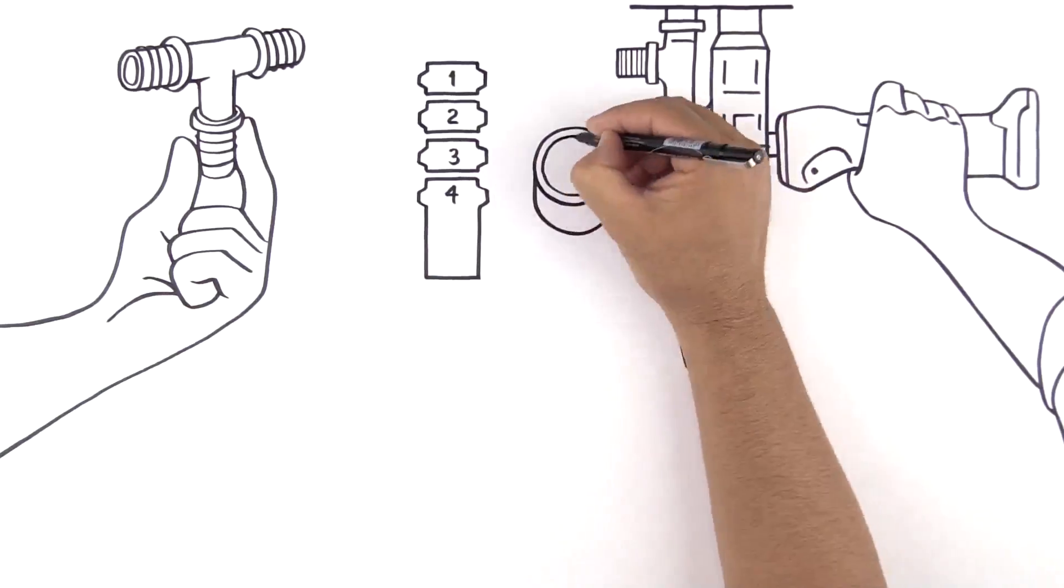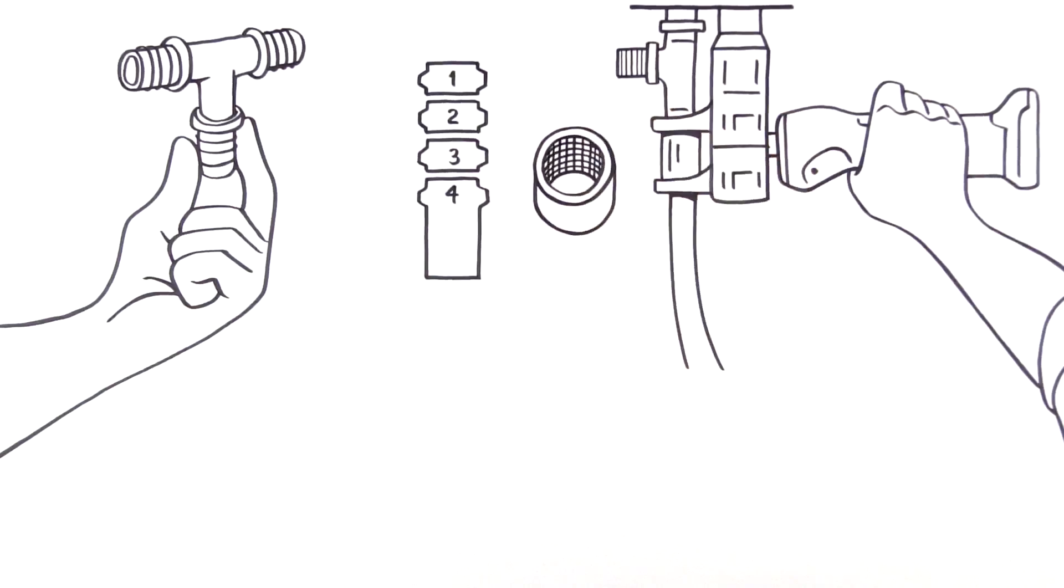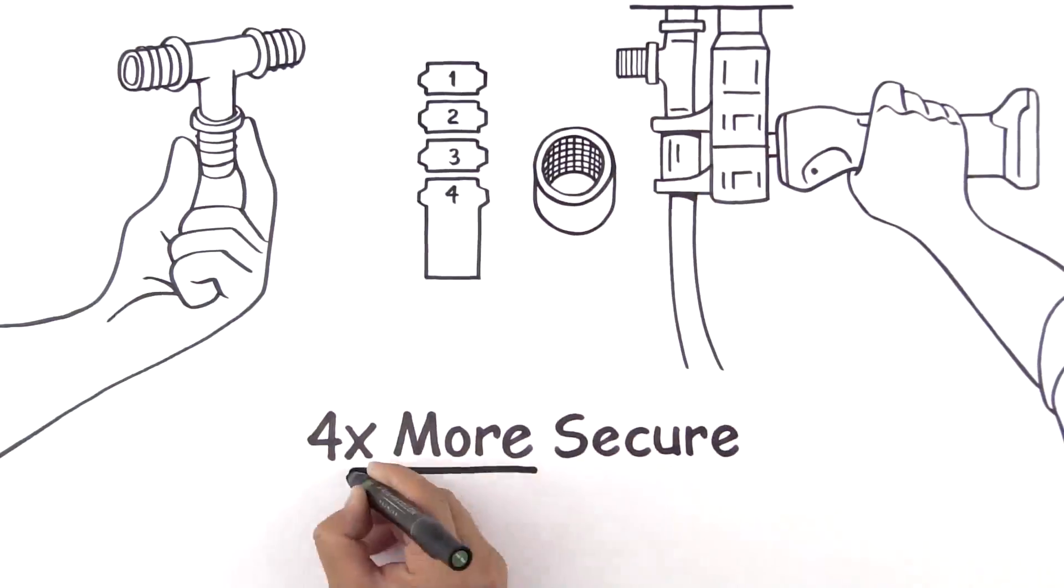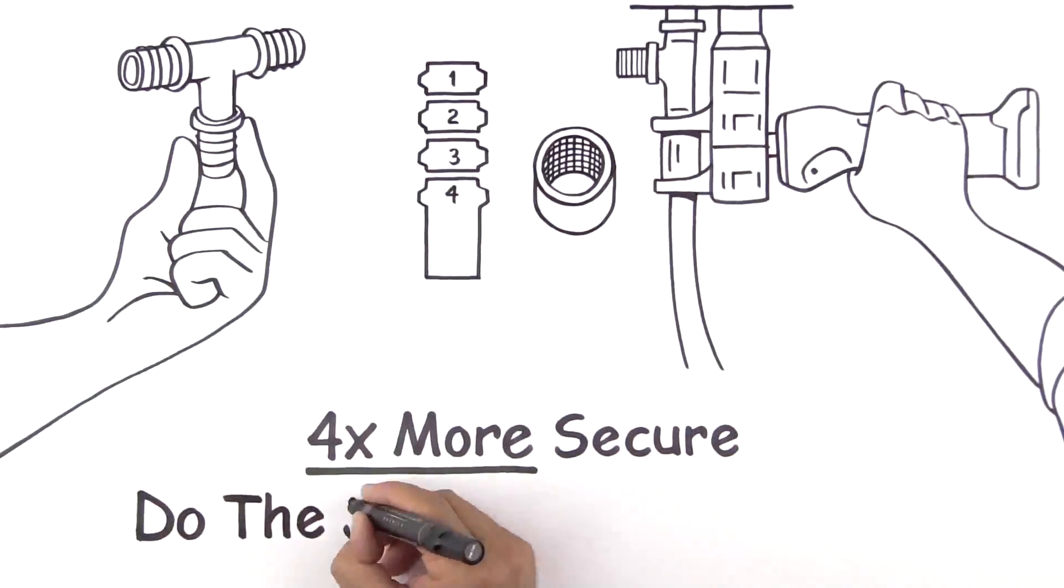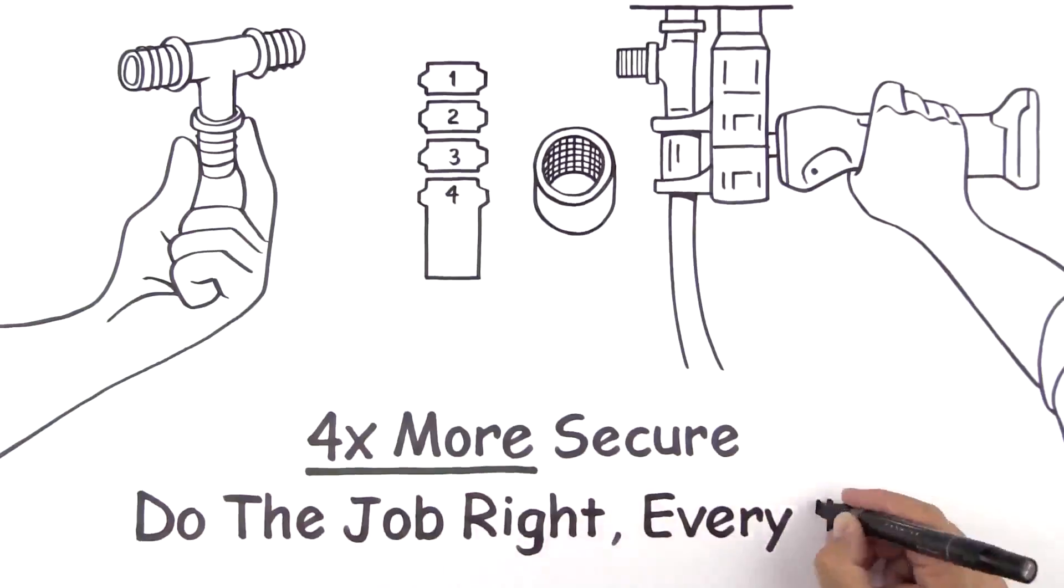The EverLock Plus sleeve grips the pipe and won't let go. The compression sleeve technology completes the connection in an instant. You can move on immediately, knowing you've done the job right every time.